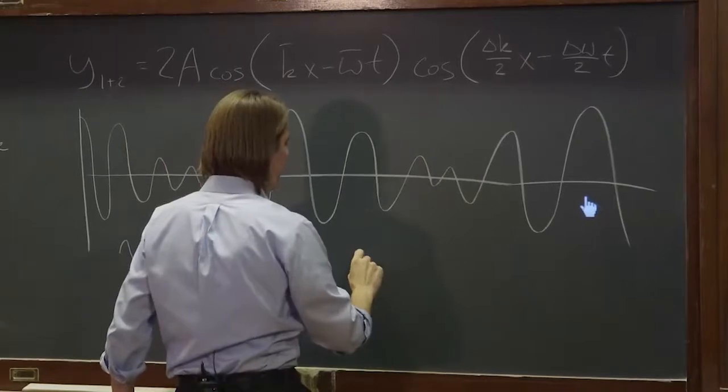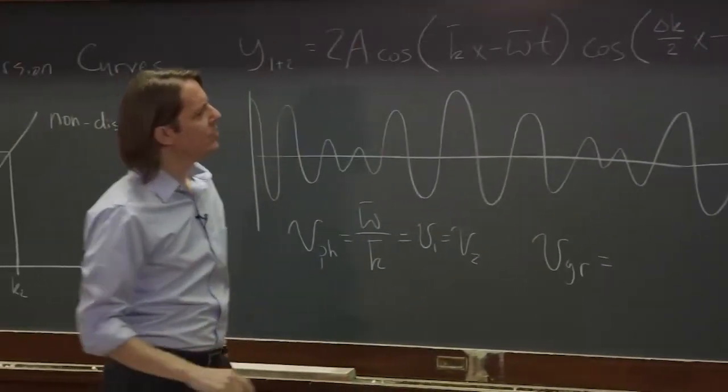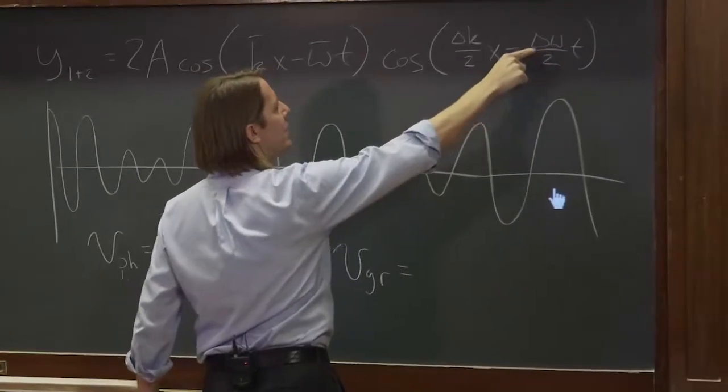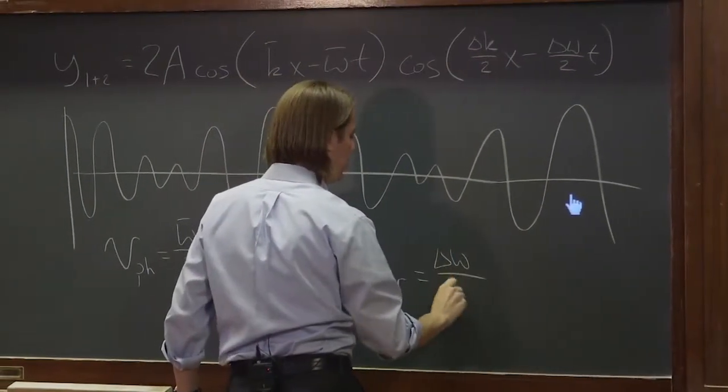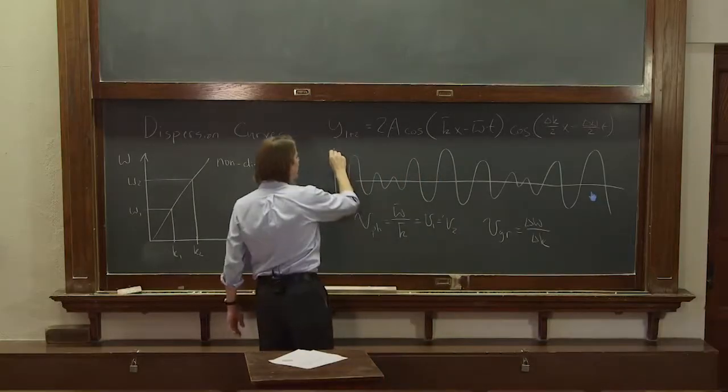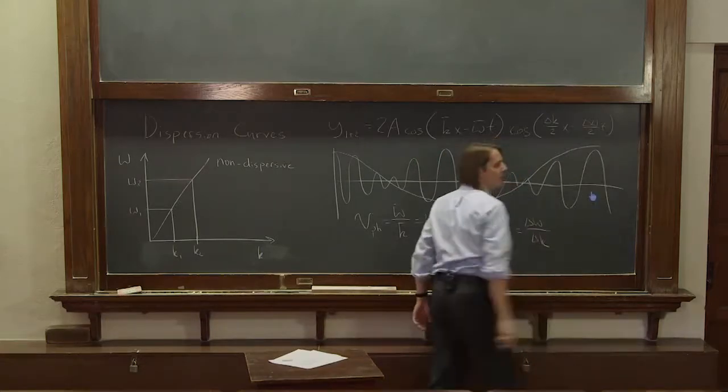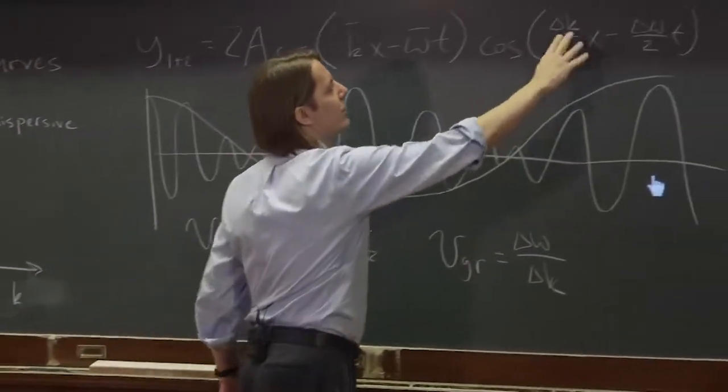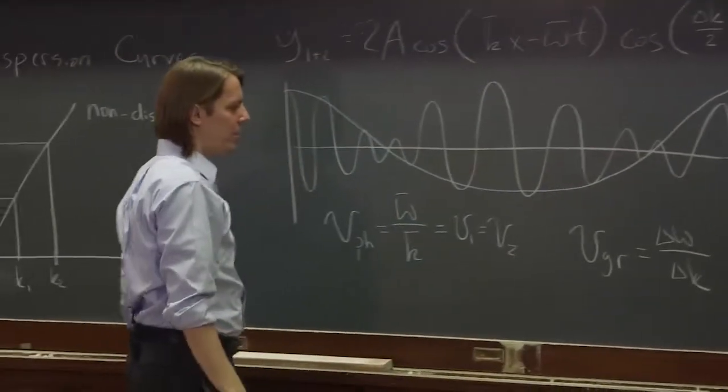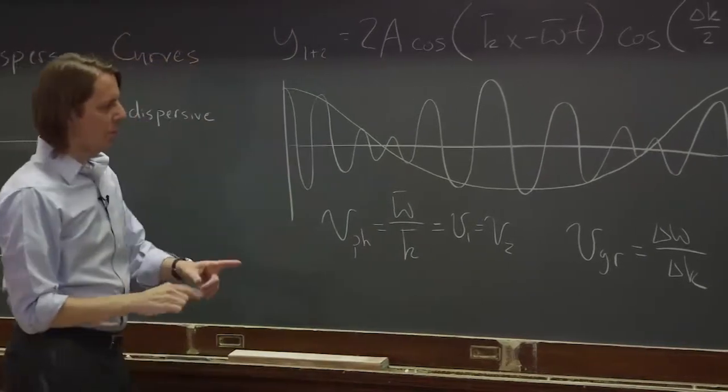The other part is this. This is the group velocity. And it's going at delta omega over delta k. The twos go away. It's the speed of this envelope function. This is what is giving us the beat pattern. It's the lower frequency because it's the difference. A small difference results in a long beat.